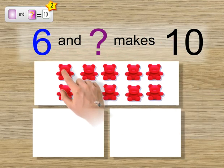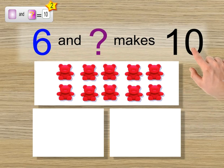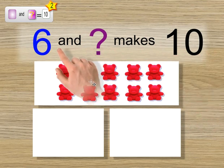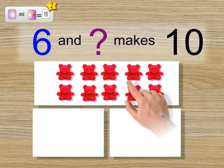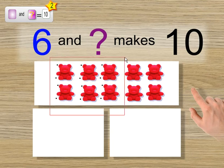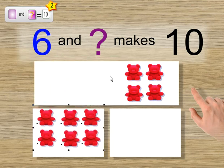Here are 10 teddies. That's the whole collection, which is this number here. Now this question is saying that the 10 is made of 6 and another amount. So let's make it easier by looking at 6 of them. That's the part which is 6.